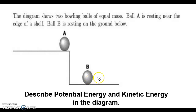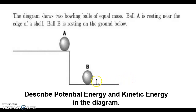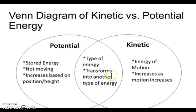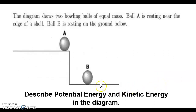We can presume that ball B has zero potential energy. Looking at the formula for potential energy — mass times height — if height is zero, any number multiplied by zero gives zero, so the potential energy of B is zero. The kinetic energy of both balls is also zero because neither of them is moving. Going back to the characteristic of kinetic energy, it increases as motion increases, but in this case they are not moving, so kinetic energy is zero.